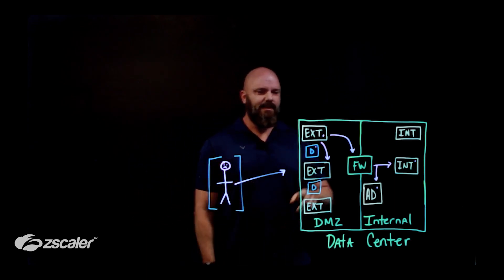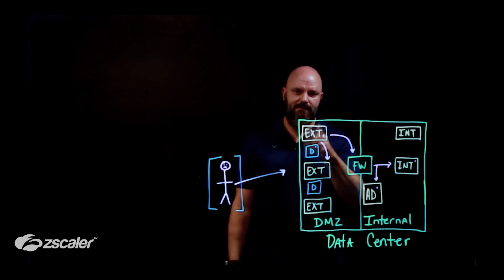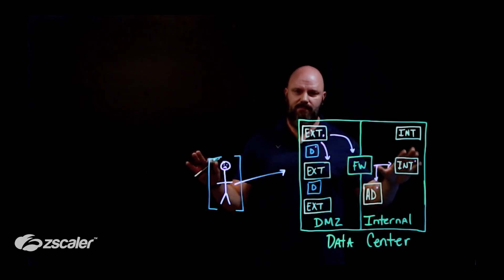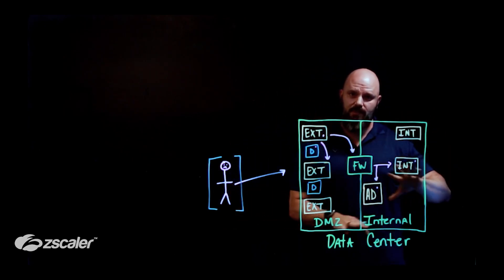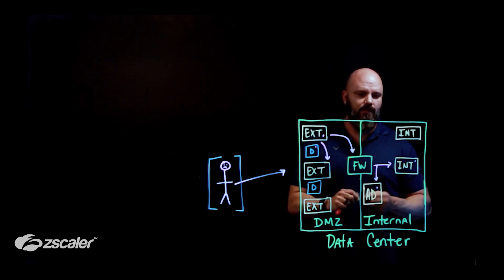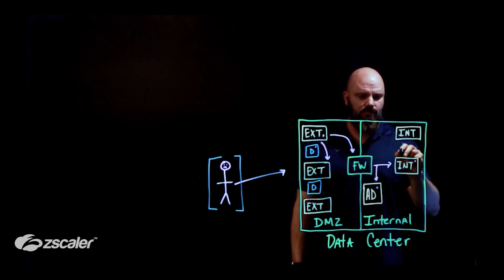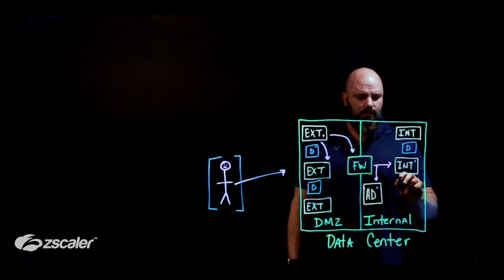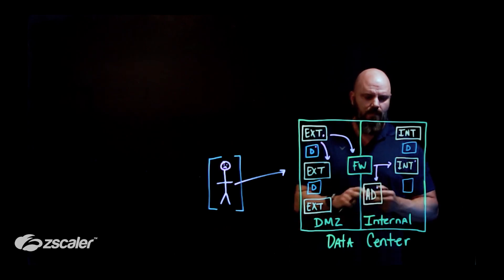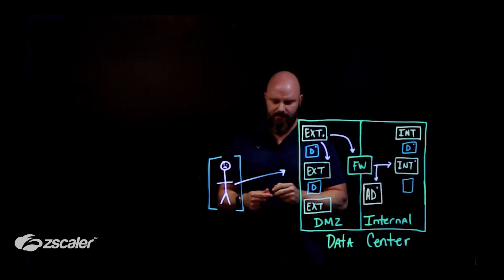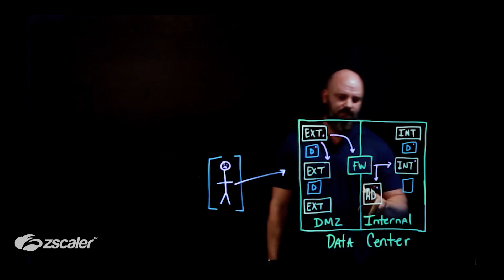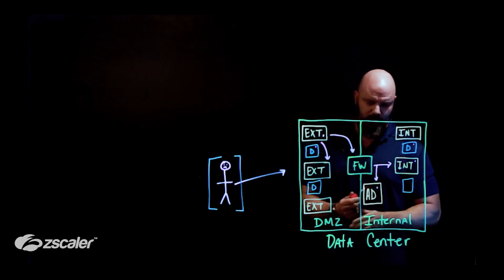But let's say for a second that I miss them and they come in through this external web server. They start pivoting around and now they've gone over here and they're starting to look and see what's available in the internal network. Well, guess what? I can throw out decoys here as well. And the idea is I want to lure them to a decoy. Boom. Catch them again. Notify the SOC. All things are gravy.